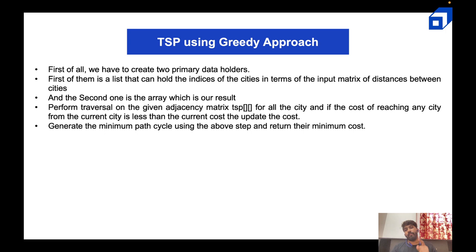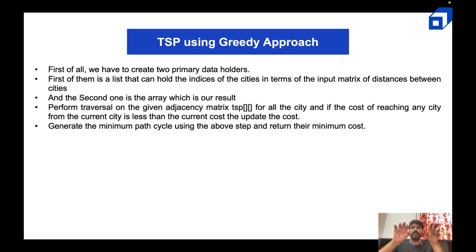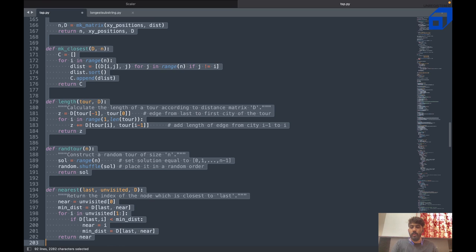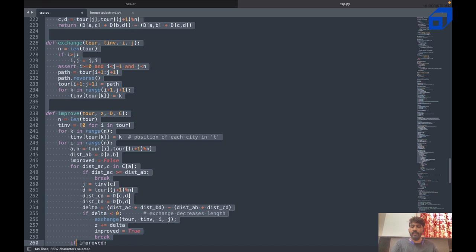For the greedy approach, first we create two primary data holders: the first is a list holding the indices of the cities from the input distance matrix, and the second is the result array. We perform a traversal on the given adjacency matrix for all cities. If the cost of reaching any city from the current city is less than the current cost, we update the cost. We calculate one path, then calculate another and compare — if the new path is lesser it gets updated. This is how the minimum path is generated in the greedy approach.